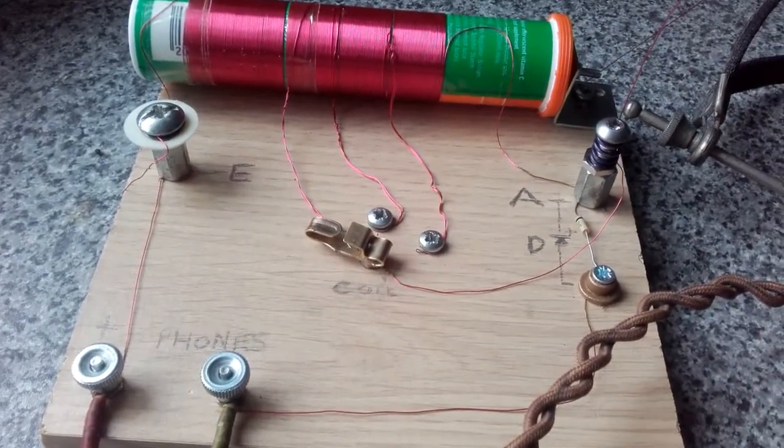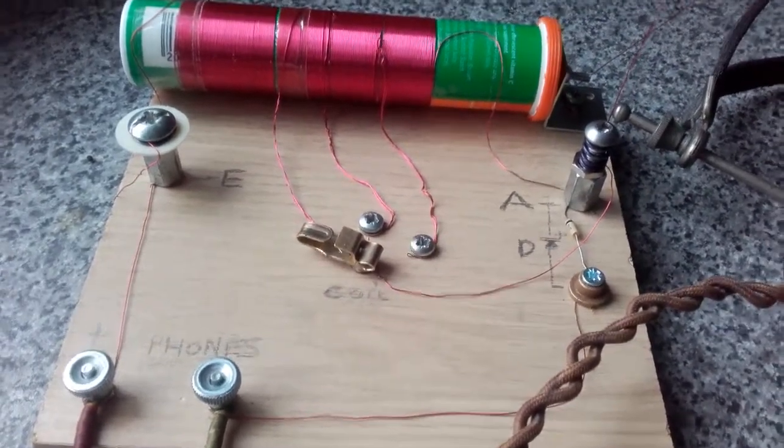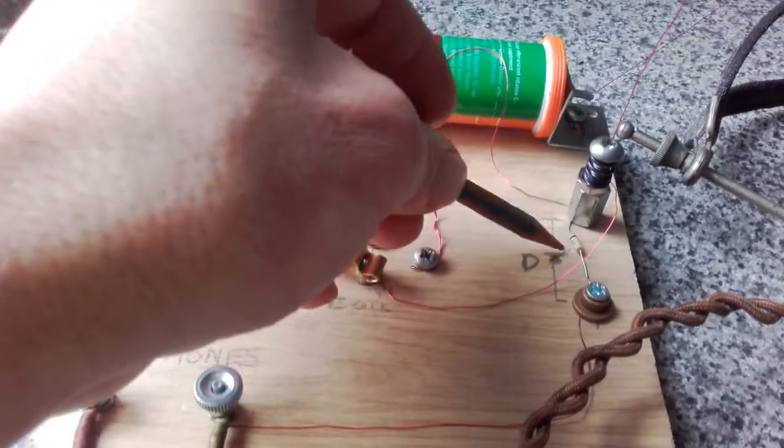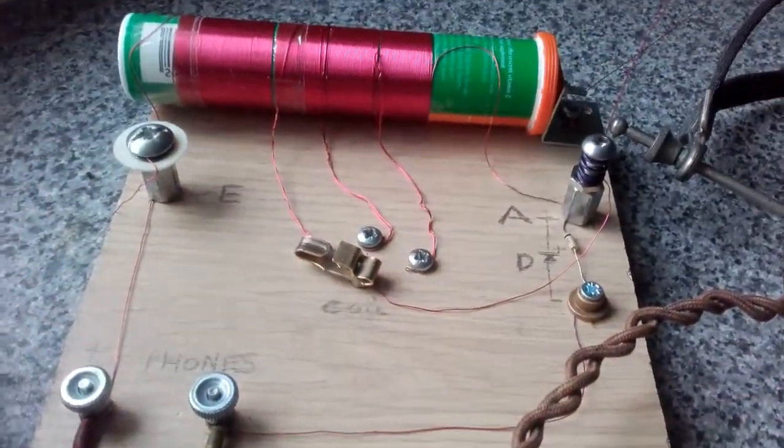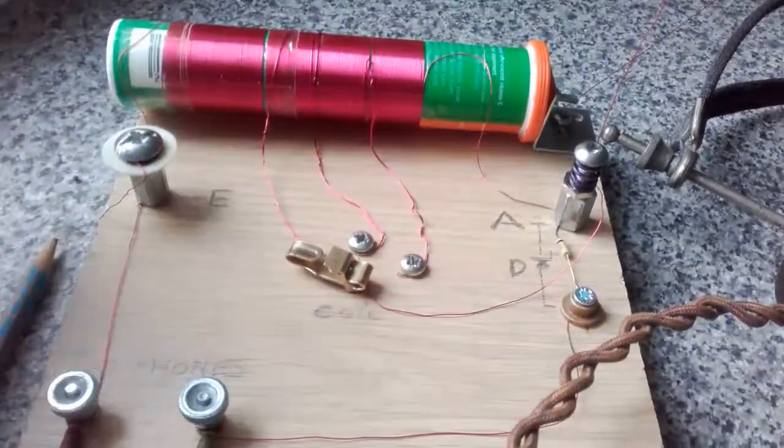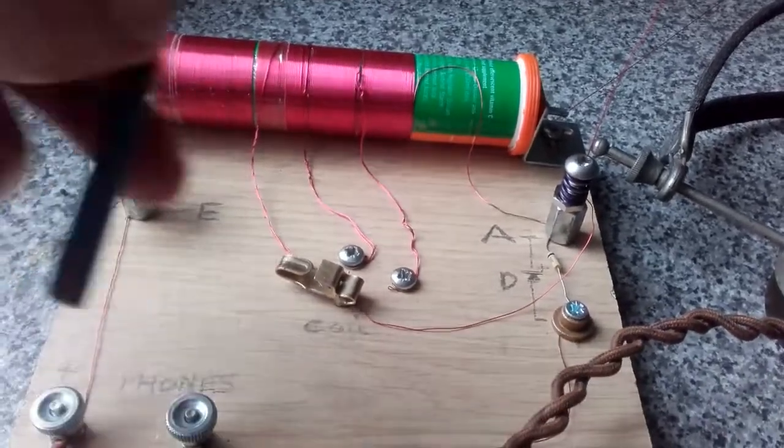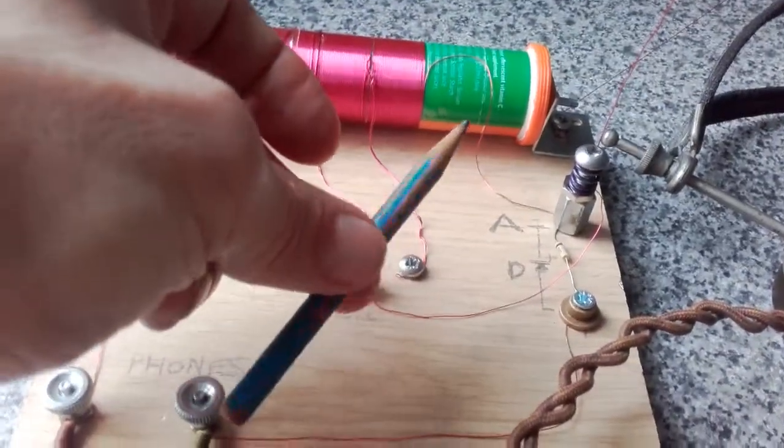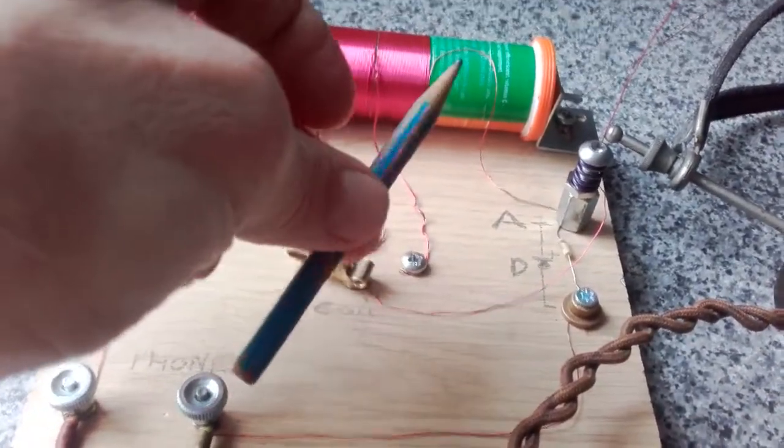The aerial's just slung out the window about 20 feet. If you didn't have a germanium diode, you could use a piece of coke or a pencil and a razor, which is what they used to use in the old prison war camp.